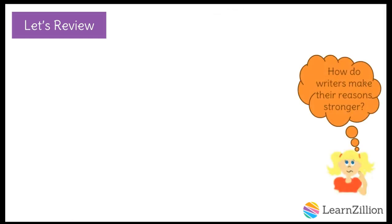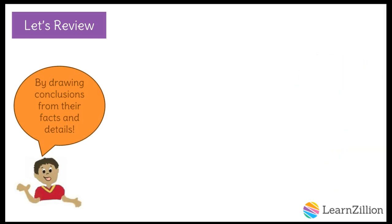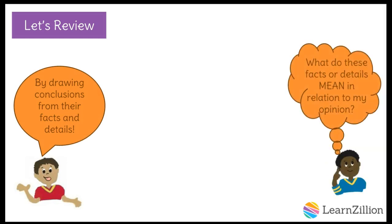Now we need to ask ourselves, how do writers make their reasons stronger so that the readers will see their opinion is valid? Writers make their reasons stronger and clearer by drawing conclusions from their facts and details. Drawing conclusions means to ask yourself, what do these facts or details mean in relation to my opinion? Or in other words, how do these facts support my opinion?